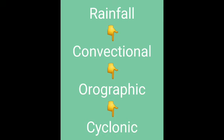Orographic rainfall: warm wet air is forced to rise over sea islands like mountains, and as the air rises it cools and condenses — this is called orographic rainfall. Cyclonic rainfall: an area of warm air meets an area of cold air, and the warm air is forced over the cold air. When the warm air meets the cold air, the water vapor condenses and the clouds form precipitation — this is called cyclonic rainfall.